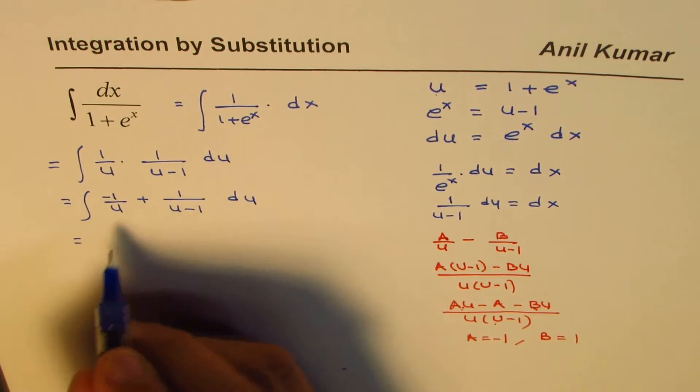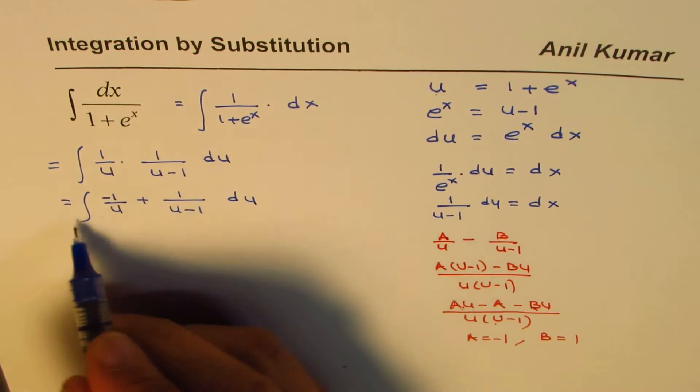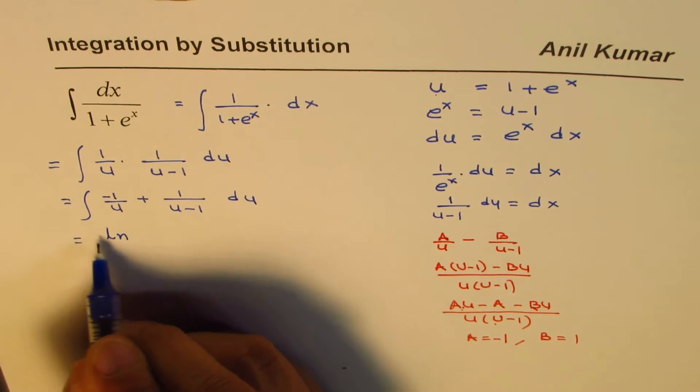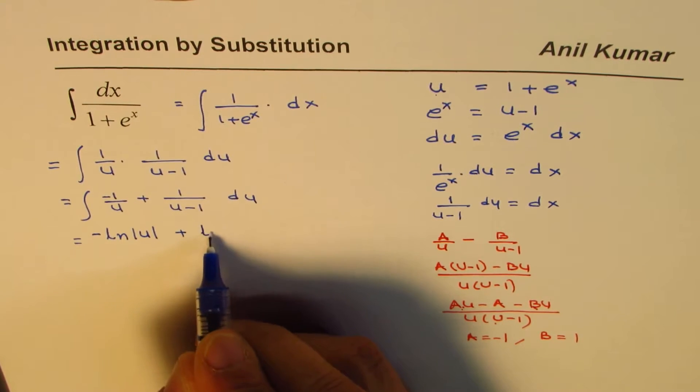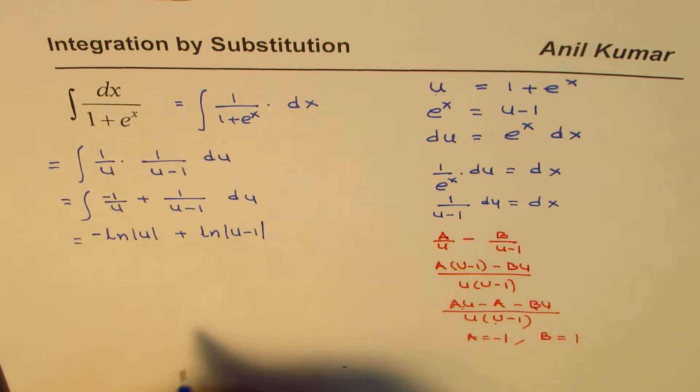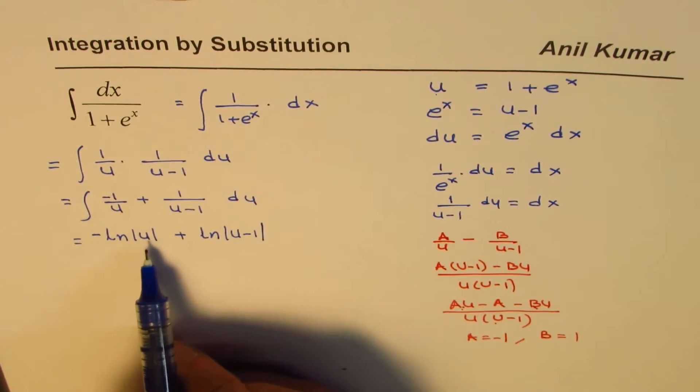So that is how we get our function. Now we can actually integrate it. So we could rearrange this also. So that gives you ln, so it is negative ln of absolute value of u plus ln of u minus 1.